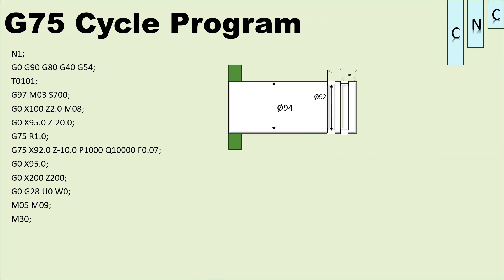Next is the G75 cyclic program. The G75 cyclic simple program is for a component of 94mm OD with a diameter change to 91-92mm, depth 10mm to 20mm, and grooving with a 4mm tool. The program structure is: N1 — line 1, 2nd block, 3rd line, 4th line, 5th line, 6th line. This is the G75 cyclic program.